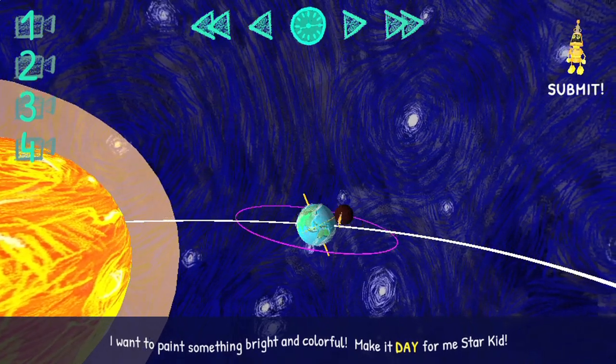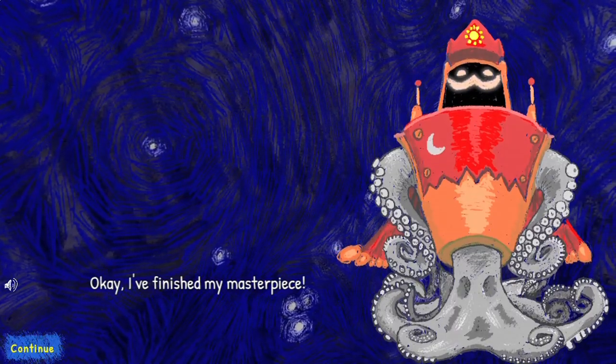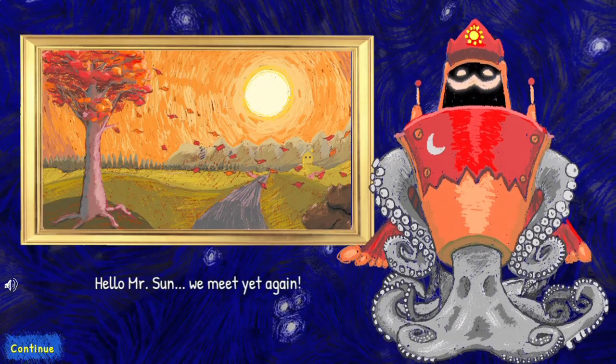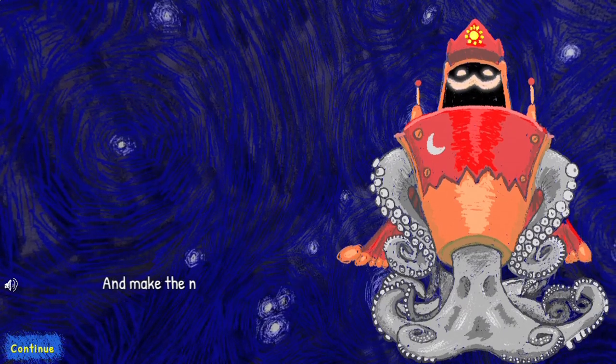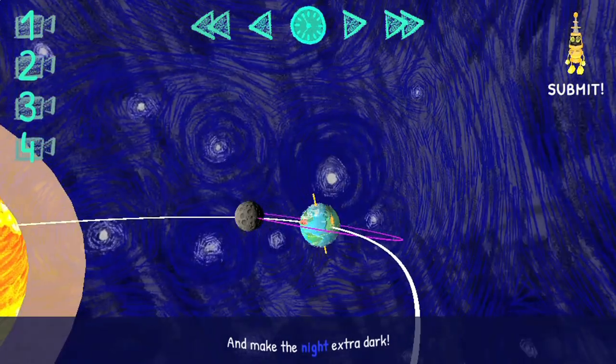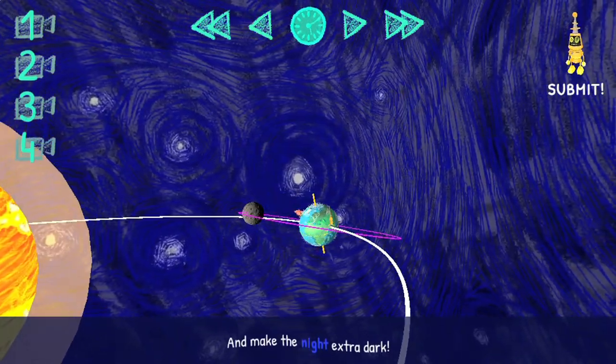He will teach you how to move the Earth in order to make the masterpiece that he wants to create. Use the mouse to click on the different buttons to help rotate the Earth around the Sun to quickly get the right time of day or the season for the space king.